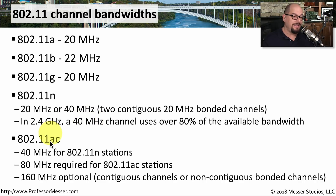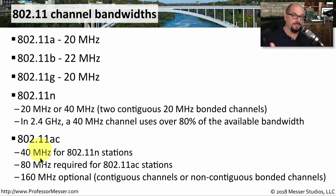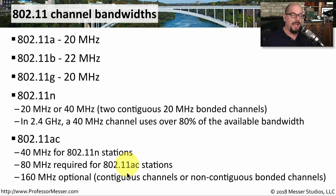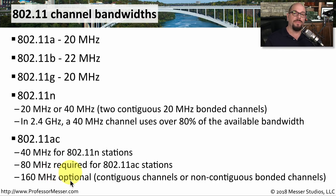To avoid the bandwidth shortcomings with 2.4 gigahertz, the 802.11ac standard uses 5 gigahertz, with a minimum channel bandwidth of 40 megahertz. It can also increase to 80 megahertz channel bandwidths, which is required for 802.11ac. And if you increase to 160 megahertz bandwidths, you would be able to move even more data through your 802.11ac network.